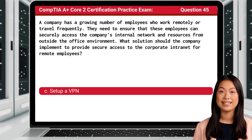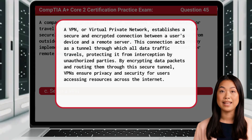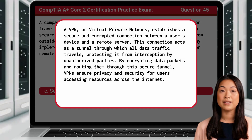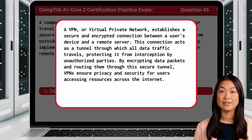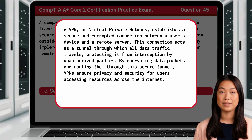The answer is C: Set up a VPN. A VPN, or virtual private network, establishes a secure and encrypted connection between a user's device and a remote server. This connection acts as a tunnel through which all data traffic travels, protecting it from interception by unauthorized parties. By encrypting data packets and routing them through this secure tunnel, VPNs ensure privacy and security for users accessing resources across the internet.